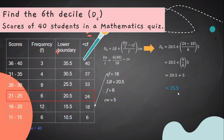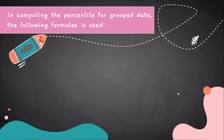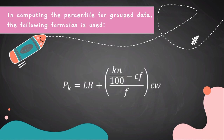Again, you can use a calculator to solve that. In computing the percentile for grouped data, the following formula is used: P sub k equals LB plus open parenthesis KN over 100 minus CF over F close parenthesis CW. I is 100 because we are looking for the percentile.